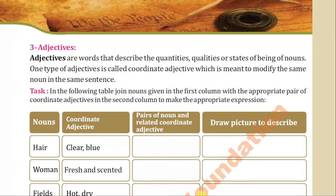Now concentrate on this definition. Adjectives are words that describe the quantities — how many, how much — qualities, what type, or state of being — in what state — of nouns. It means they qualify the nouns. One type of adjective is called a coordinate adjective, which is meant to modify the same noun in the same sentence. These adjectives are used with the nouns in the same sentence.